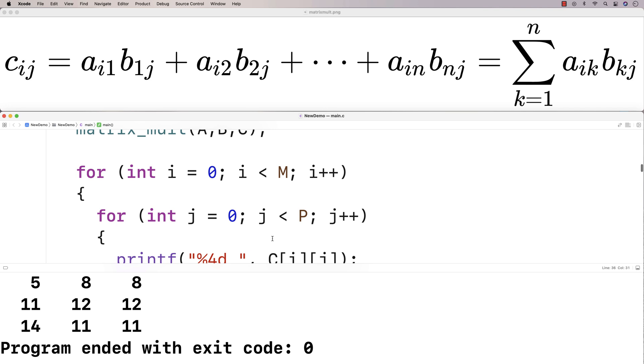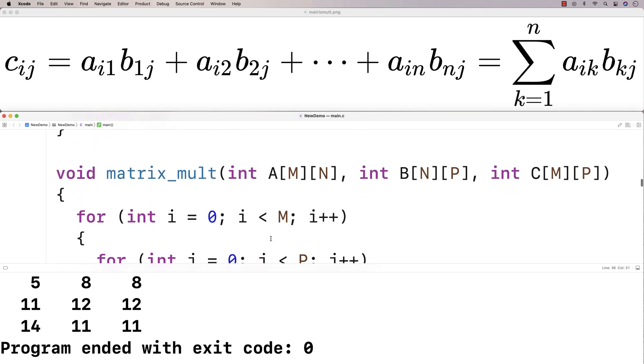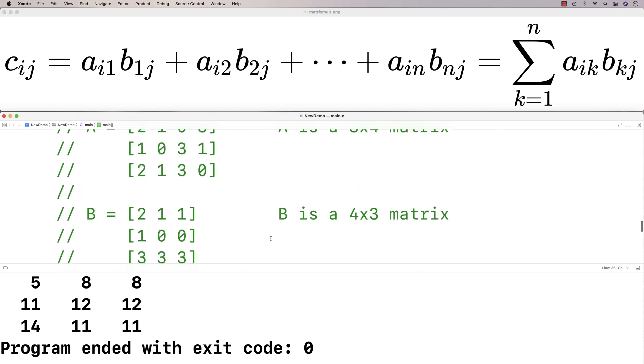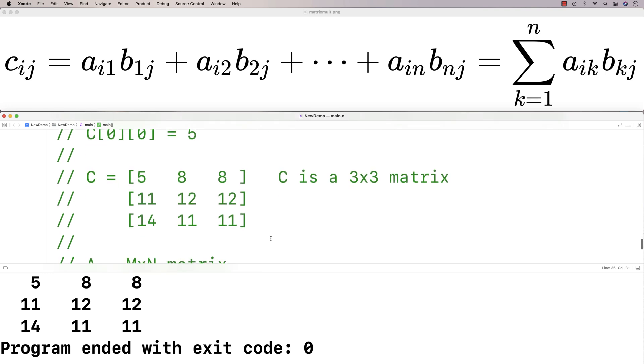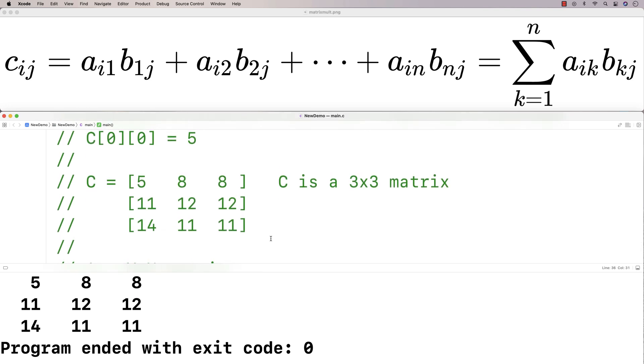And I get here 5, 8, 8, 11, 12, 12, 14, 11, 11. And if we look at our sample solution here, it's exactly the same. And so that's how we can implement the matrix multiplication algorithm in C.